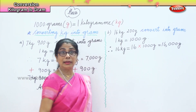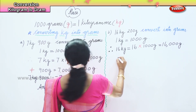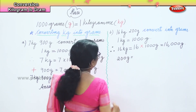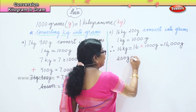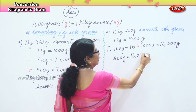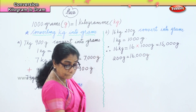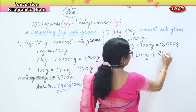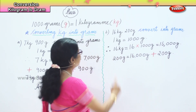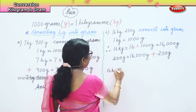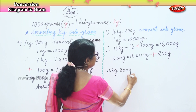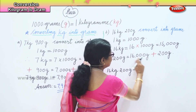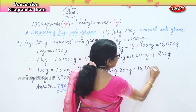Now we also have 200 grams to add. So 16,000 grams plus 200 grams gives us the answer: 16,200 grams.